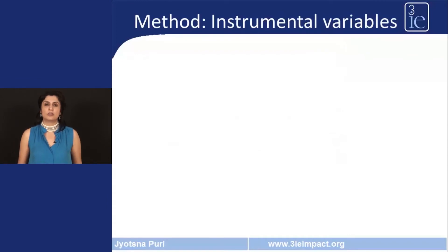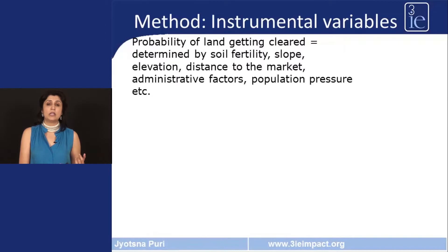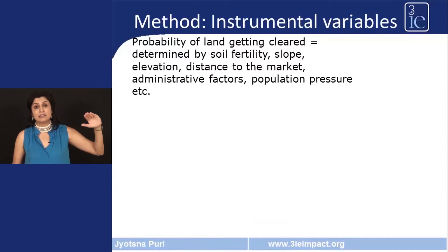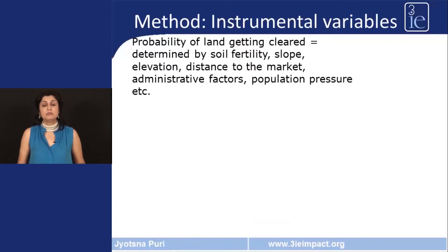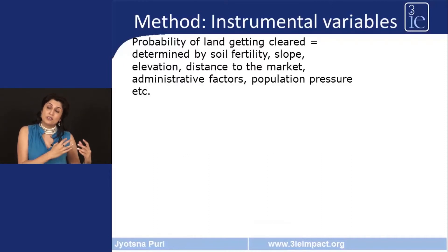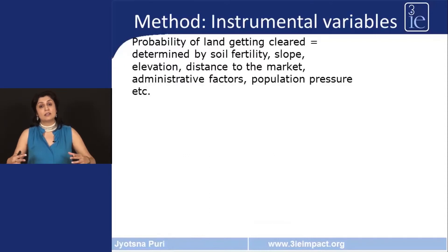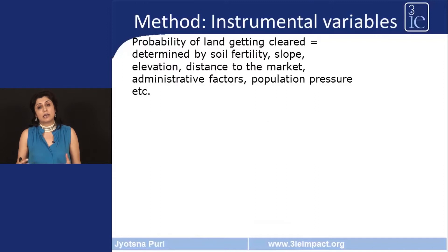The method used is instrumental variables — a quasi-experimental method for identification. We hypothesized that the probability that land will get cleared is determined by soil fertility (more fertile soil, more likely to be cleared), slope (steeper slopes, less likely to be cleared), elevation (higher and more remote, less likely to be cleared), distance to market (further from market, less profitable to clear), and administrative factors and population pressure (higher population density, more likely to be cleared).